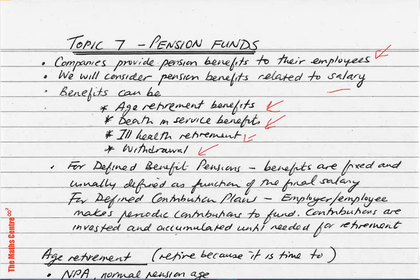We have two types of pension plans. The first is defined benefit plans, where benefits are fixed and usually defined as a function of the final salary. You will see formulas of the form n over 80 times FAS, where n is the number of years of service, 1 over 80 is the accrual factor, and FAS is your final average salary.